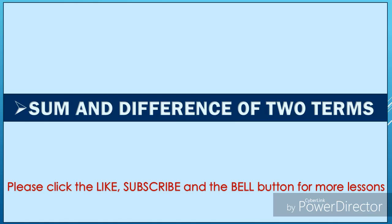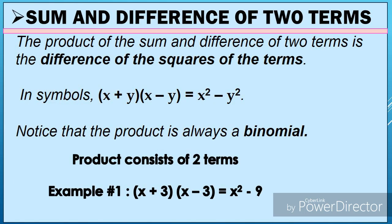Now let's have sum and difference of two terms. Why sum and difference of two terms? Sum means plus, difference means minus — two terms, or binomial. So the product of the sum and difference of two terms is the difference of the square of the terms. In symbol, we have: (x + y)(x − y) = x² − y².